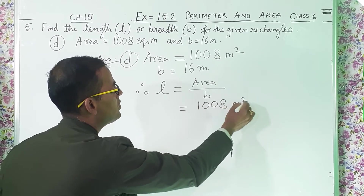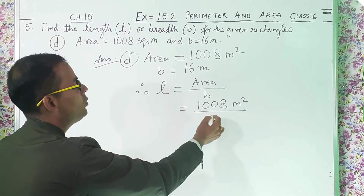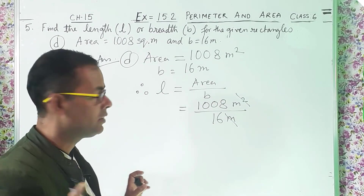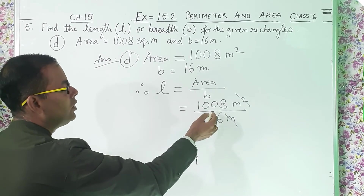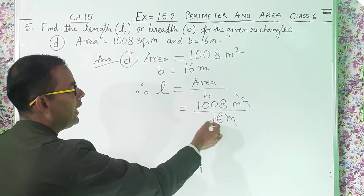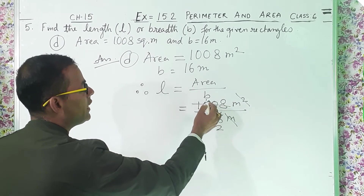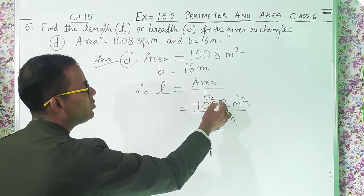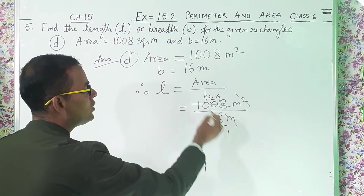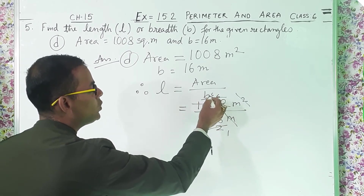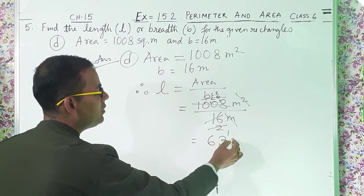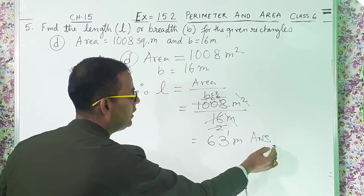Area is 1008 meter square and breadth is 16 meters. Meter and square cuts. Now divide: 8 twos are 16, 8 ones are 8, 2 left 20, 8 twos are 16, 4 left, 8 sixes are 48. Again cut: 2 ones are 2, 2 sixes are 12, 2 threes are 6. So you get 63 meters and this is the answer.